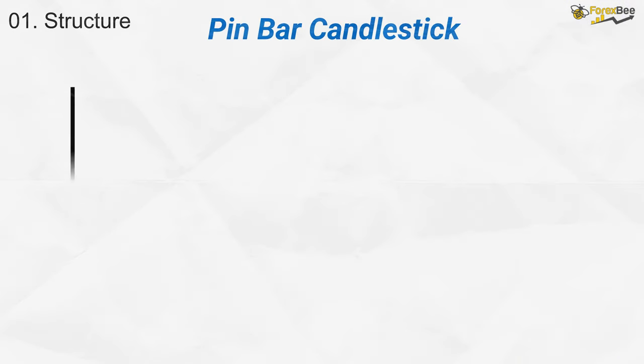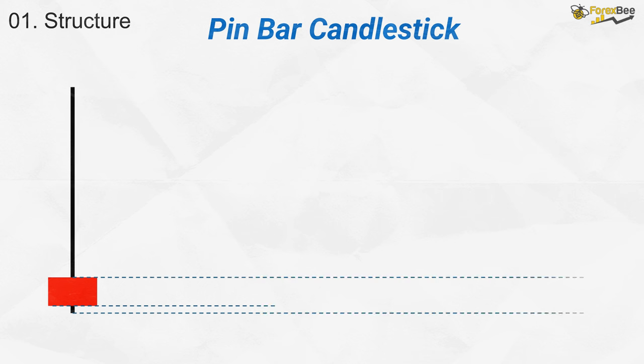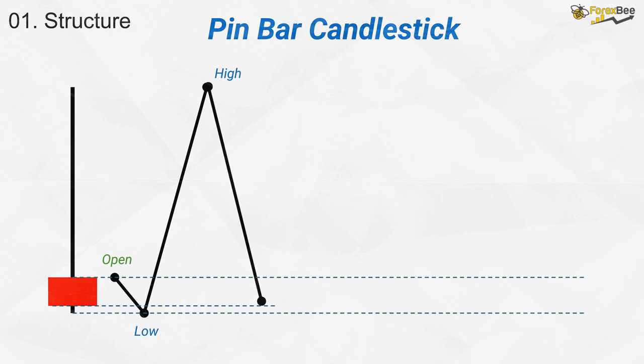First of all, let's talk about pin bar. For the bearish pin bar, the market opens, moves down briefly, then buyers push the price up. However, strong selling pressure forces the price down before closing, leaving a long upper shadow, indicating a strong rejection of higher prices by sellers.